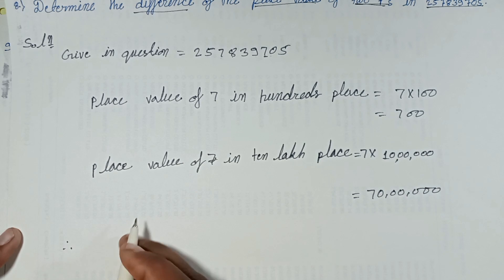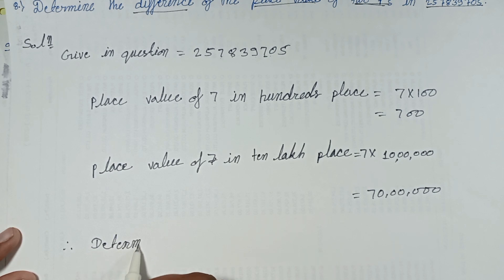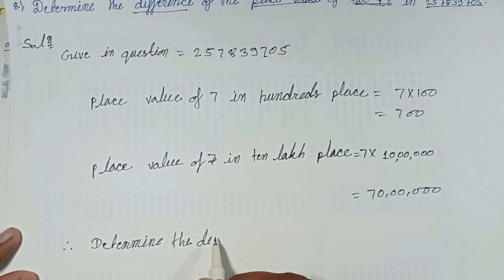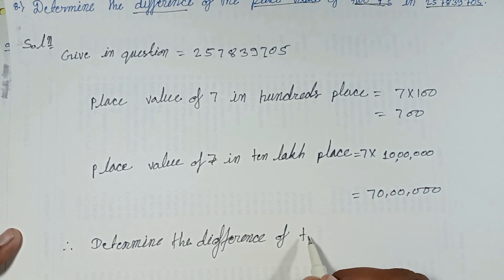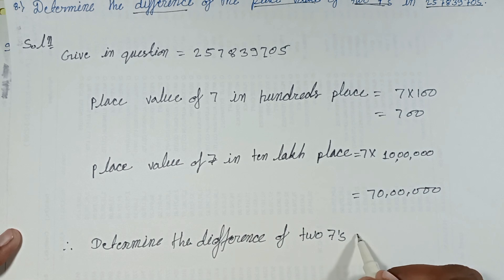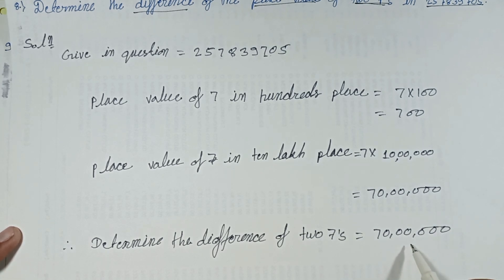Therefore, determine the difference of the two 7s. First place value is 70 lakh, second place value is 700. Now calculate the difference: 70,00,000 minus 700.